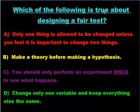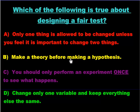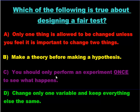How about this question: which of the following is true about designing a fair test? Is it A — only one thing is allowed to be changed unless you feel it's important to change two things? No — you're only allowed to change one thing, no matter what. How about B — make a theory before making a hypothesis? No, because the hypothesis has to come first; that's your guess with an explanation, and your theory comes at the very end once you know the answer. And C — you should only perform an experiment once to see what happens — is also no. You never do an experiment just once because it could be a lucky result. The answer is D: change only one variable and keep everything else the same.